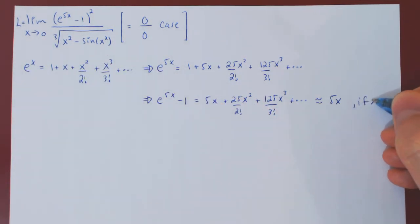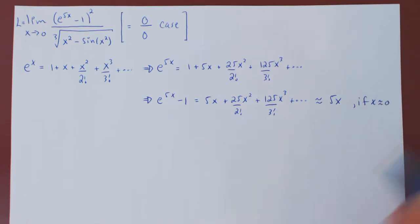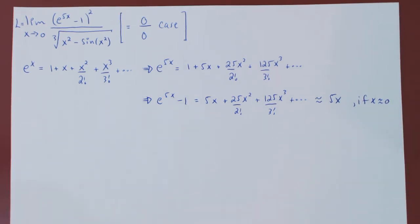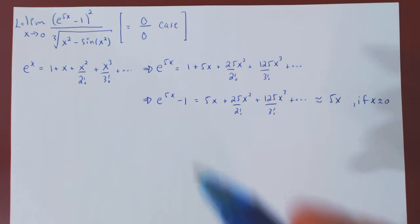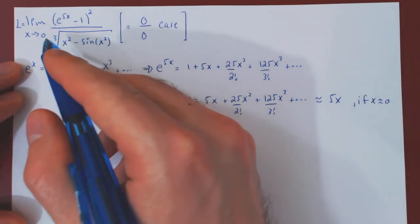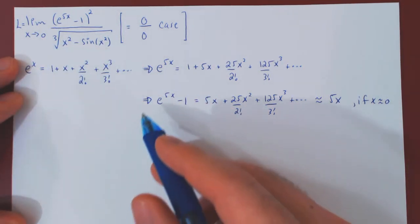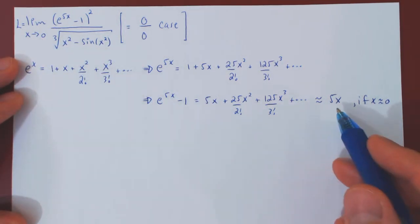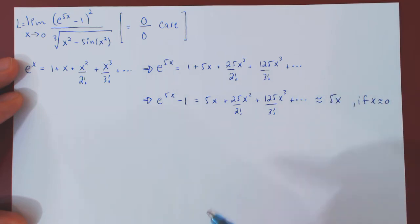So we now have an approximation for the numerator. When x is very small, e to the 5x minus 1 is approximately simply 5x.